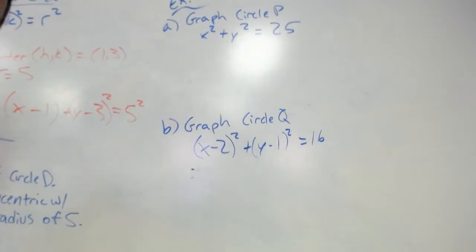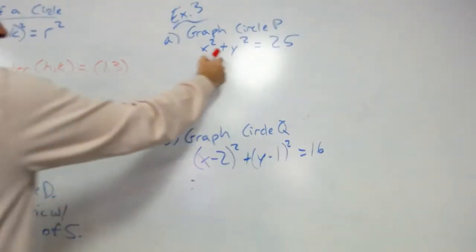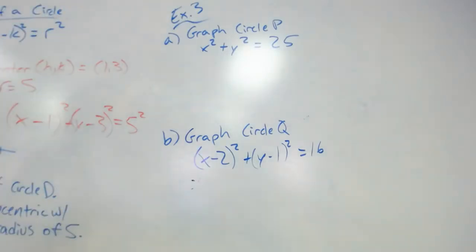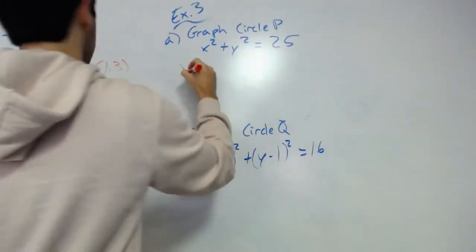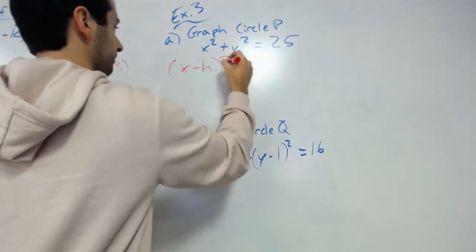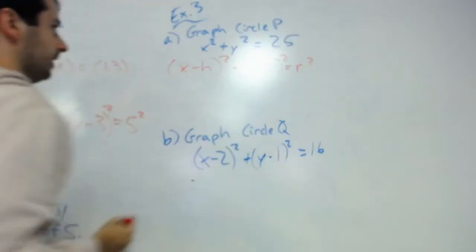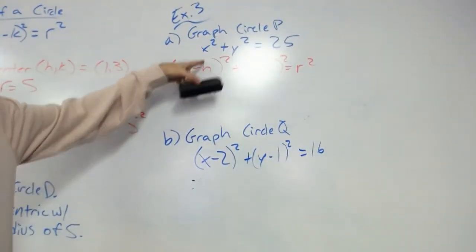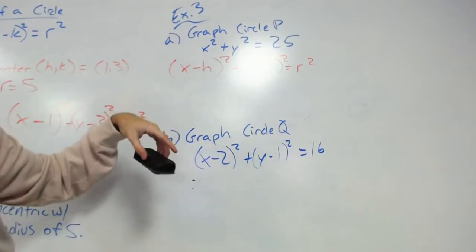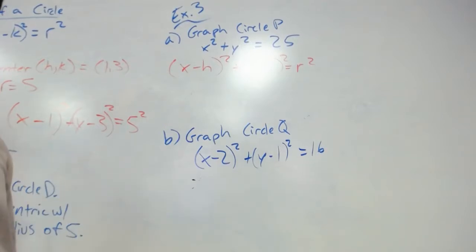Graph circle P: x² + y² = 25. I'm going to rewrite the formula so you can see it. It doesn't have minus anything in parentheses, so that must mean h and k are both zero.